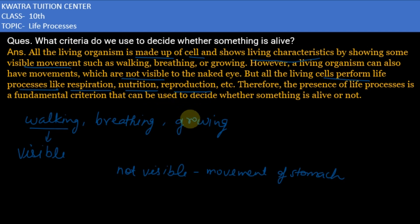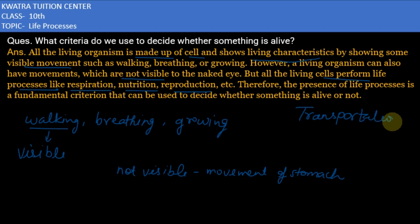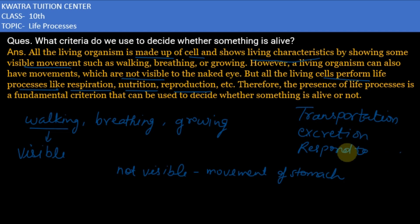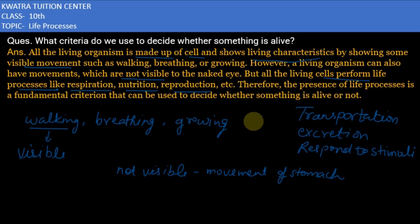These are the features of living organisms: transportation, excretion, respond to stimuli, and reproduction. These are all the criteria we use to decide whether something is alive or not.